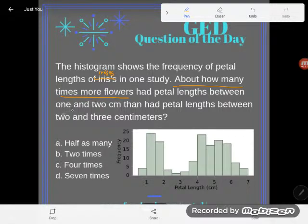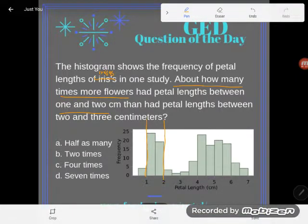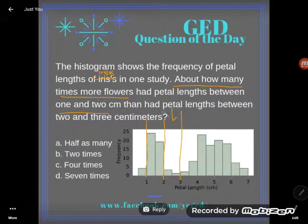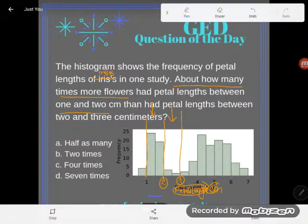They want me to compare the flowers that had petal lengths between one and two centimeters — so between one and two centimeters are all the flowers in that category — with the ones that had petal lengths between two and three centimeters. The x-axis is labeled petal length in centimeters. So I'm comparing how many times more one bar is than the other.